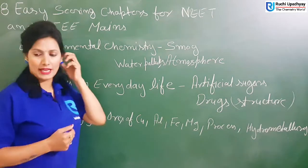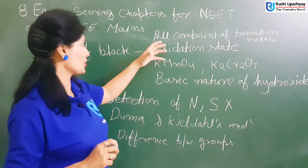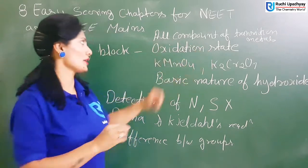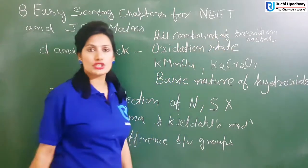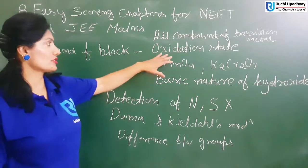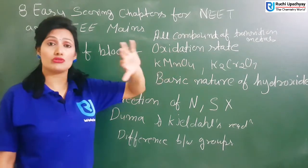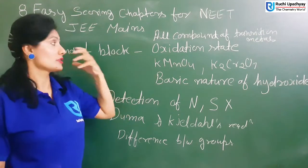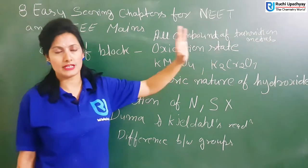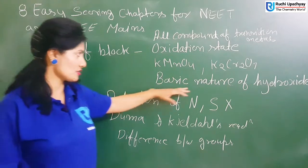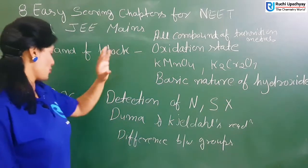Now, for D and F block elements: in this chapter, study all compounds of transition metals. Oxidation state is important. Study K2Cr2O7 reactions and processes. You will also read about the basic nature of hydroxides in the D and F block.